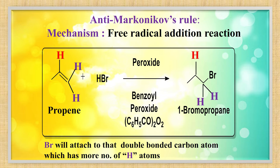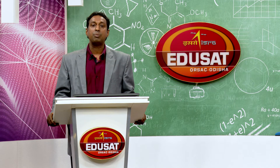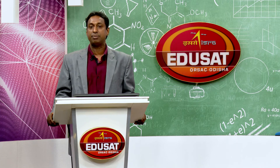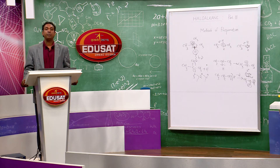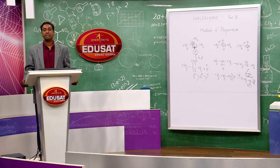Anti-Markovnikov rule: when adding HBr in the presence of an organic peroxide (e.g., benzoyl peroxide), the reaction follows anti-Markovnikov addition. Remember, only HBr works here — HCl and HF bonds are too strong for the peroxide to break them; and HI is not used because I• recombines easily to form I2.